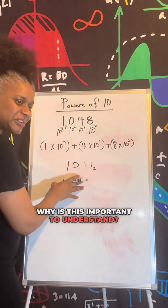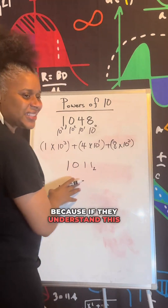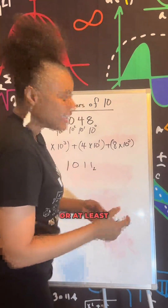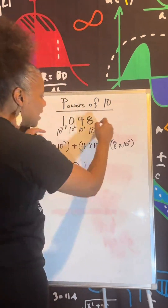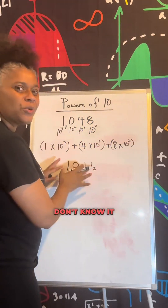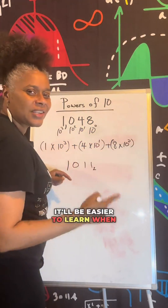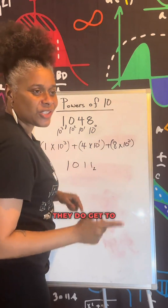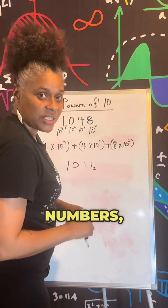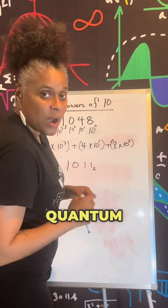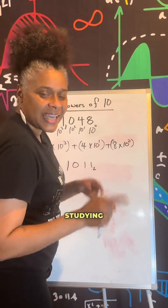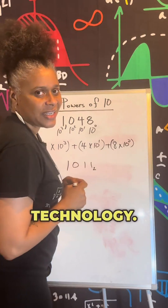Why is this important to understand? Because if they understand this, they can easily go into computer science. And if they don't know it right now, it'll be easier to learn when they do get to binary numbers, hexadecimal numbers, studying quantum computing, AI, and blockchain technology.